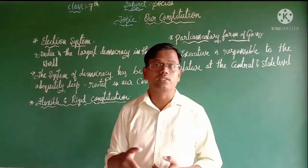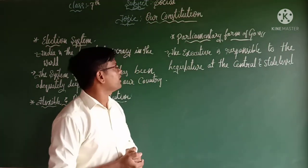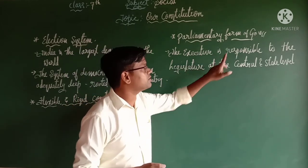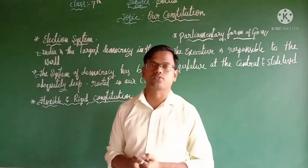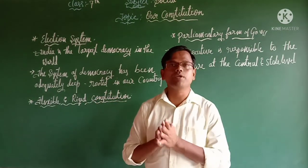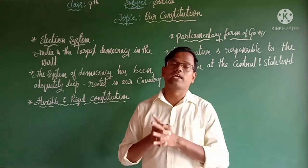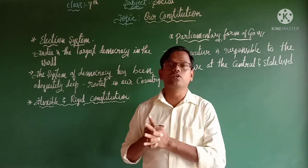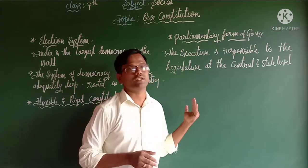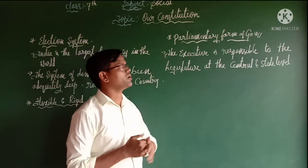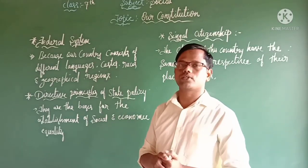The next feature is the parliamentary form of government. The executive is responsible to the legislature at both the central and state level. The cabinet shall remain in power as long as it enjoys the confidence of the legislature. If the cabinet loses the confidence of the legislature, it has to resign.